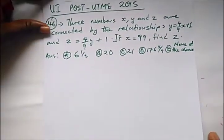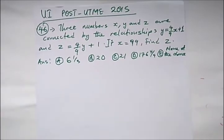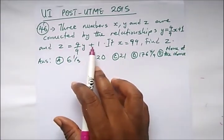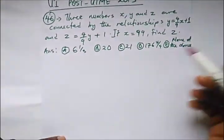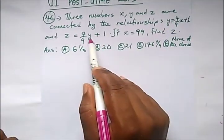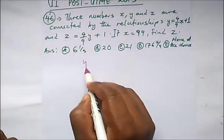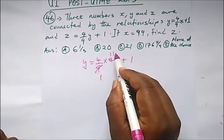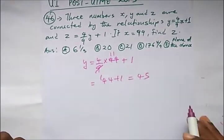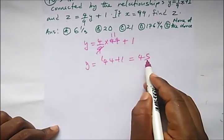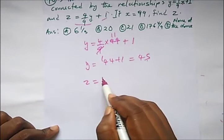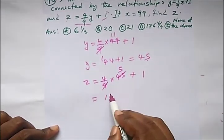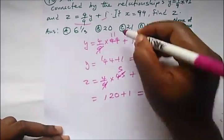Our next question: the three numbers X, Y, and Z are connected by Y = (4/9)X + 1 and Z = (4/9)Y + 1. If X = 99, find Z. First, find Y by substituting X = 99: Y = (4/9)(99) + 1 = 44 + 1 = 45. Then substitute Y = 45 into the Z equation: Z = (4/9)(45) + 1 = 4 × 5 + 1 = 20 + 1 = 21. So our right answer is 21.